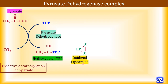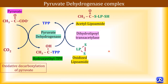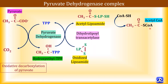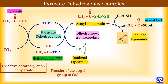In the next step, the acetyl group is transferred from hydroxyethyl-TPP to oxidized lipoamide to form acetyl-lipoamide, with TPP regenerated. This is catalyzed by dihydrolipoyl transacetylase. The acetyl group attached to acetyl-lipoamide is then transferred to coenzyme A to form acetyl-CoA, while lipoamide becomes reduced lipoamide.